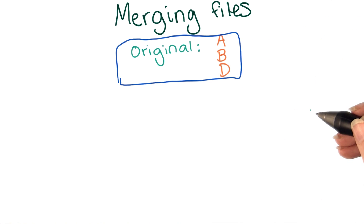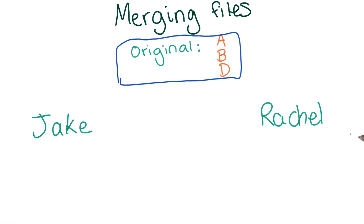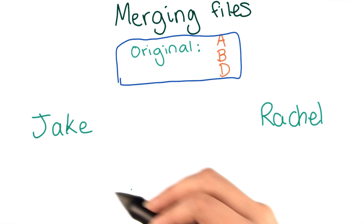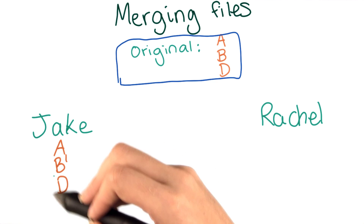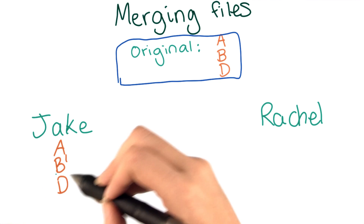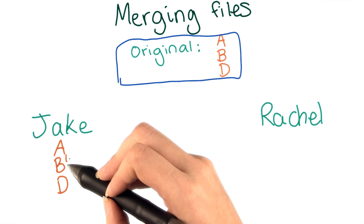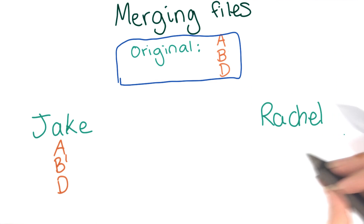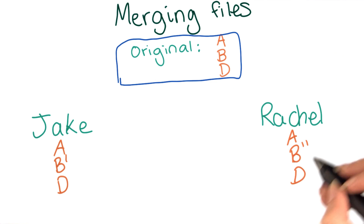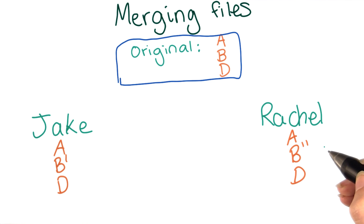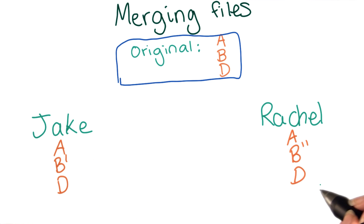Again, like in the previous example, Jake's file and Rachel's file look a little bit different at the end of the day. Jake's file contains the lines A, B', and D, where B' just stands for a modified version of B. Rachel's file contains A, B' — another modified version of B, but not the same one as Jake's — and D.